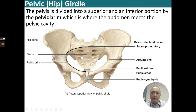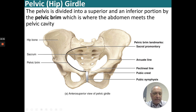The pelvis is divided into a superior and inferior portion by the pelvic brim, which is where the abdomen meets the pelvic cavity. This pelvic brim is a little wider in females. The pelvic brim landmarks include the sacral promontory, the arcuate line, the pectineal line, and finally the pubic crest leading to the pubic symphysis.